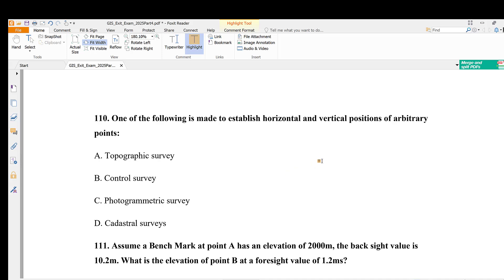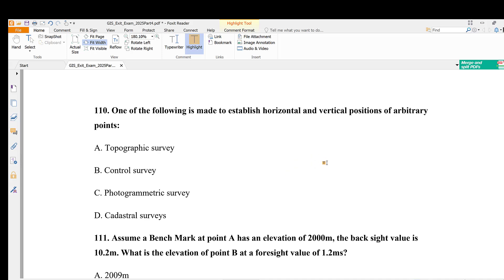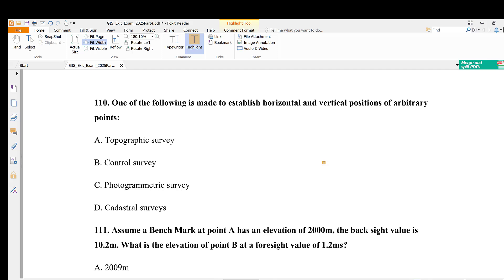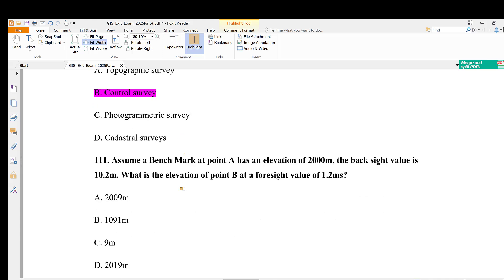Question 110: Which of the following is made to establish horizontal and vertical positions of arbitrary points? Topographic survey, control survey, photogrammetric survey, or cadastral survey? The answer is control survey.